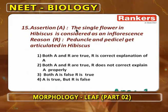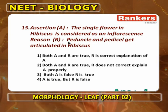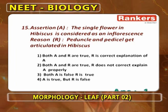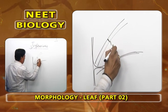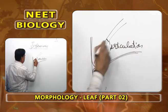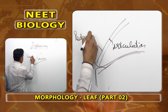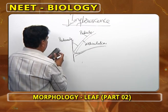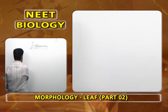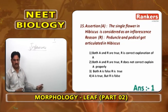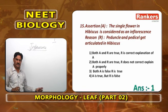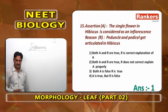Next: the single flower in Hibiscus is considered as an inflorescence. Reason: peduncle and pedicel get articulated in Hibiscus. In Hibiscus, inflorescence is axillary solitary cyme. The stalk shows a joint called articulation — below the joint is peduncle, above is pedicel. Both peduncle and pedicel are found, proving it is an inflorescence. Both A and R are correct, and R is the correct explanation of A.